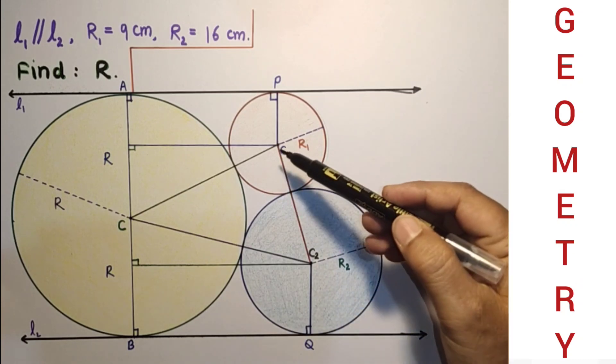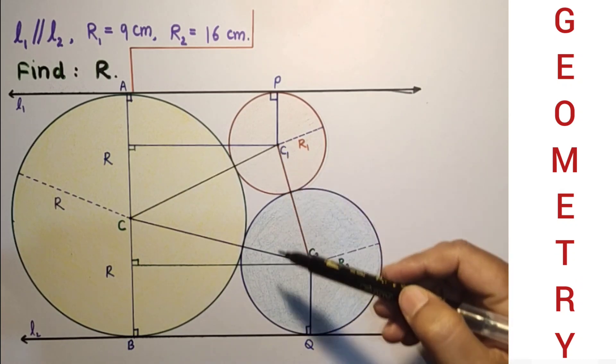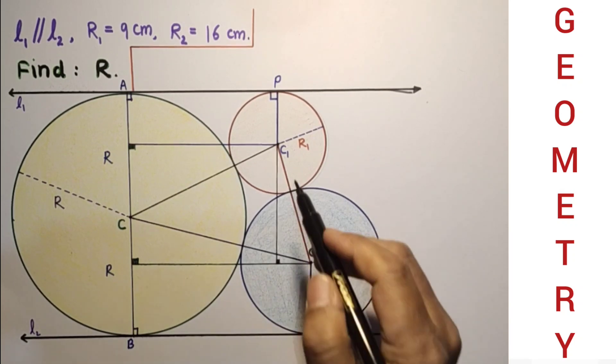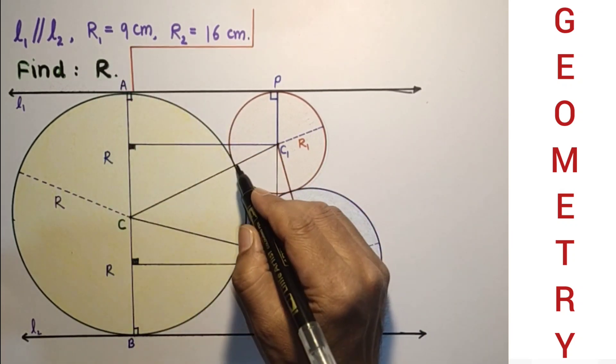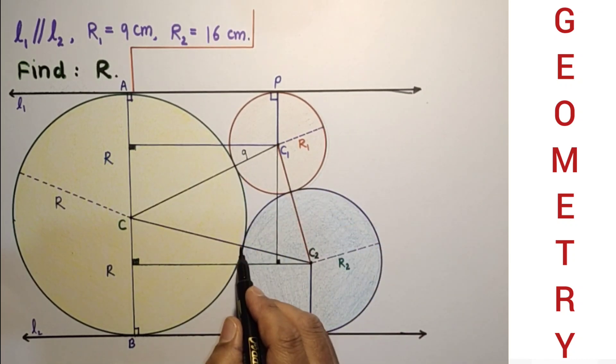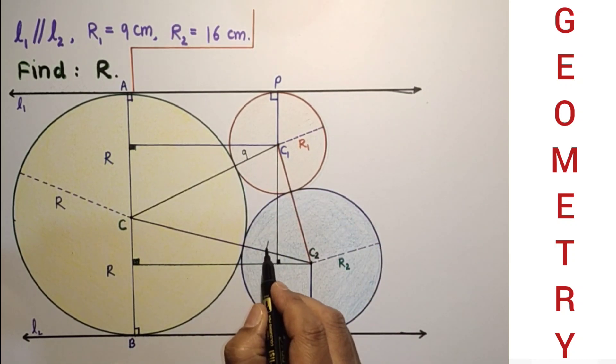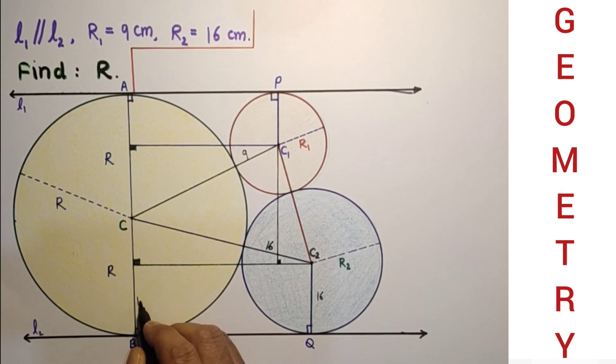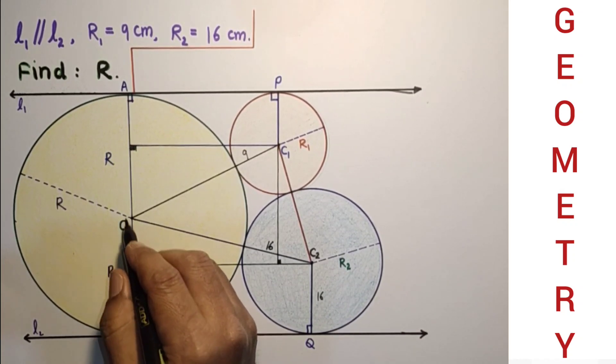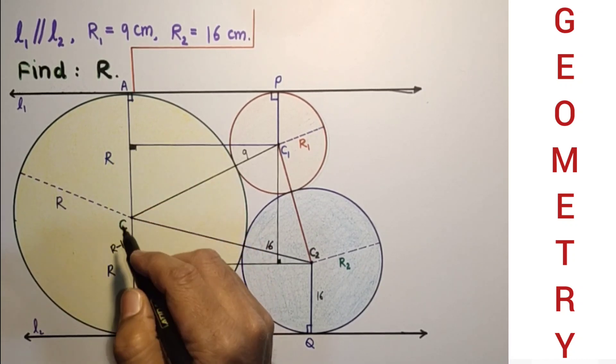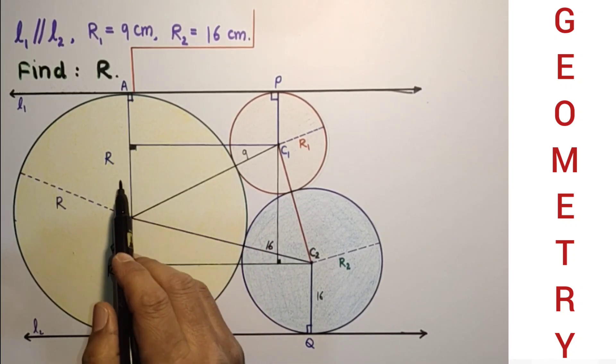Now from this center draw perpendicular to this perpendicular drawn. This R1 is given as 9, so from here to here it is 9. And from here to here it is 16. This is 16. This is also from here to here 16, so only this part is R-16. And this part is R-9.